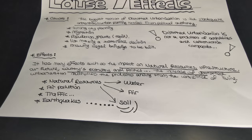Another cause of distorted urbanization is rapid population growth and migration to the city from the countryside. Also modernization, industrialization, migration from countryside to city, and development in an uncontrolled manner are examples for the causes of distorted urbanization.